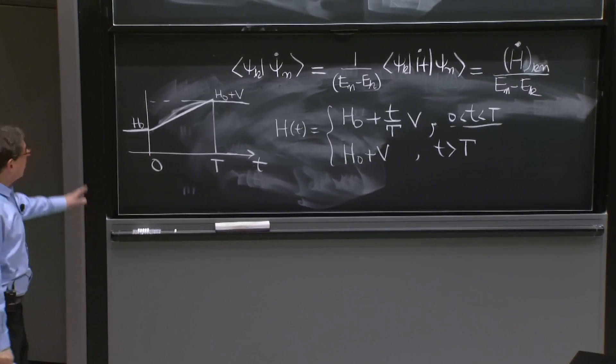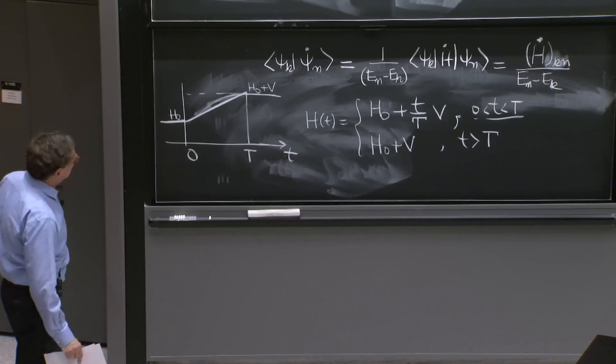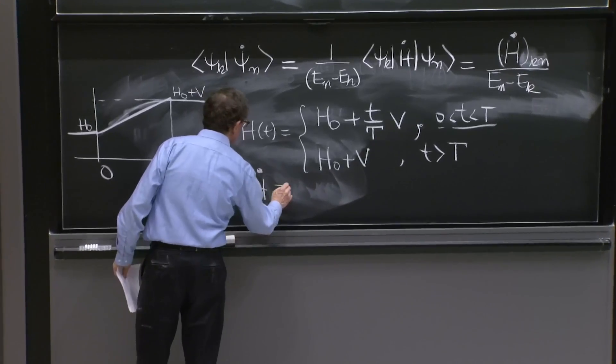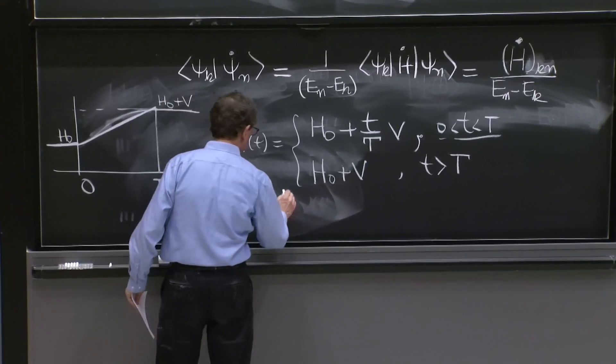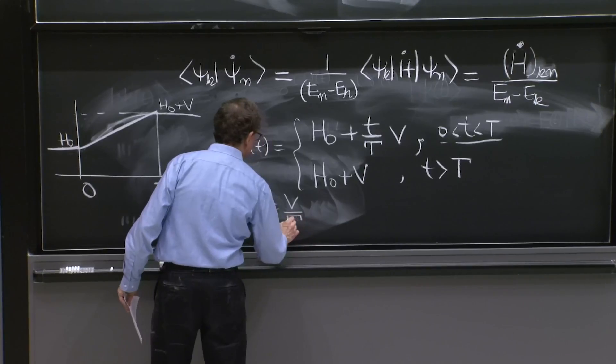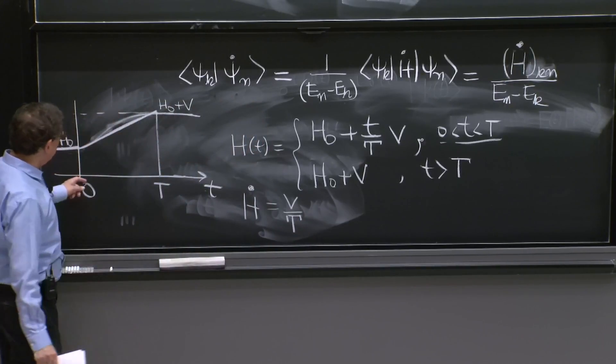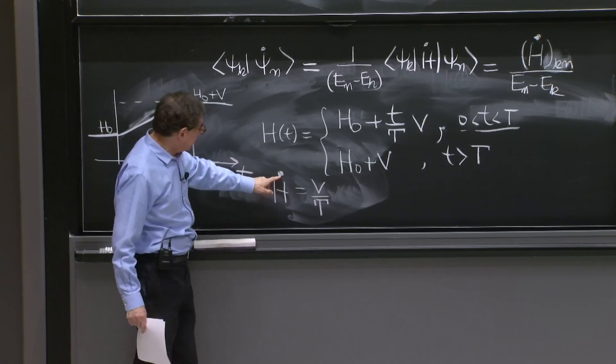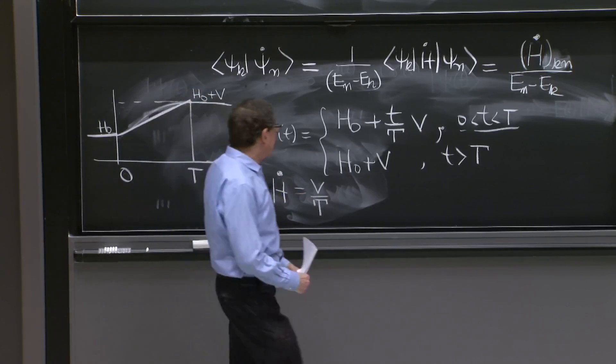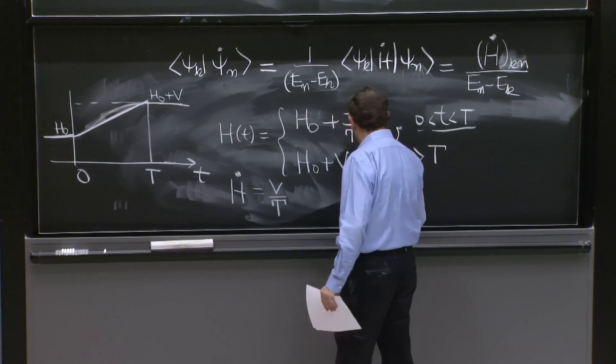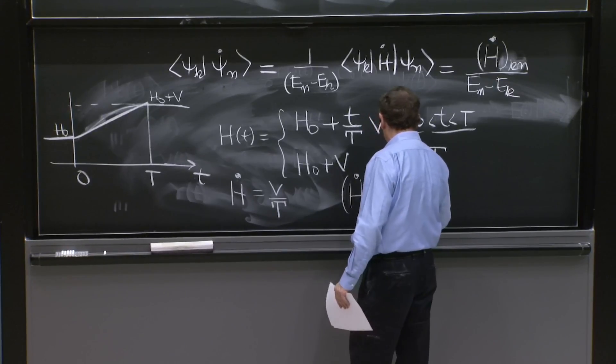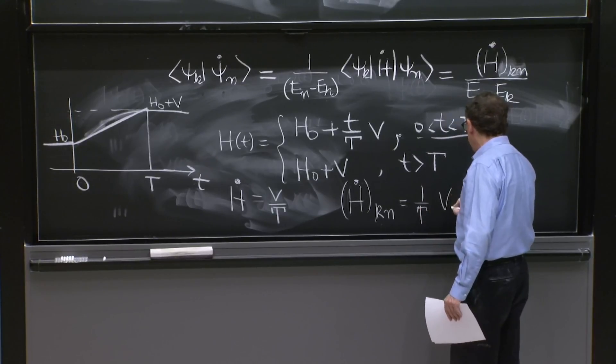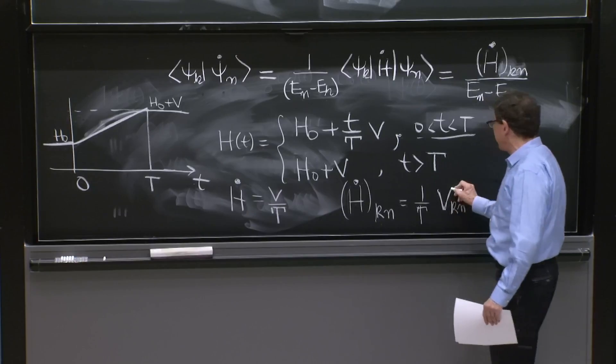So if you have this thing here, you will have that h dot is equal to v over t, capital T. And that's intuitive. The more time you take to make this finite transition, the smaller the value of the derivative. And therefore, an h dot matrix element k n will be 1 over capital T, the matrix element k n of the operator v.